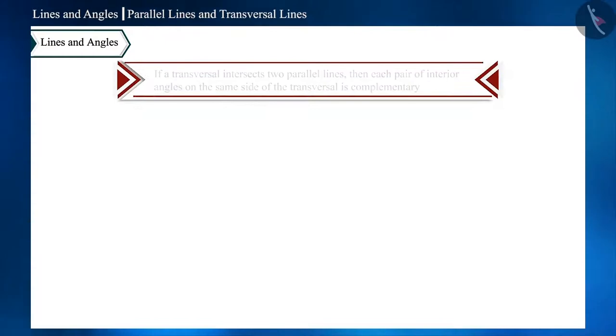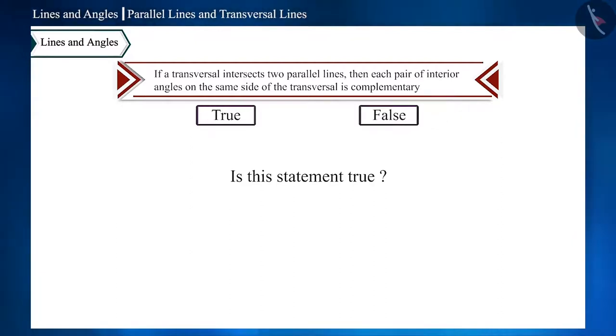With a statement: if a transversal intersects two parallel lines, then each pair of interior angles on the same side of the transversal is complementary. Is this statement true friends? Let's understand the statement with the help of a figure.